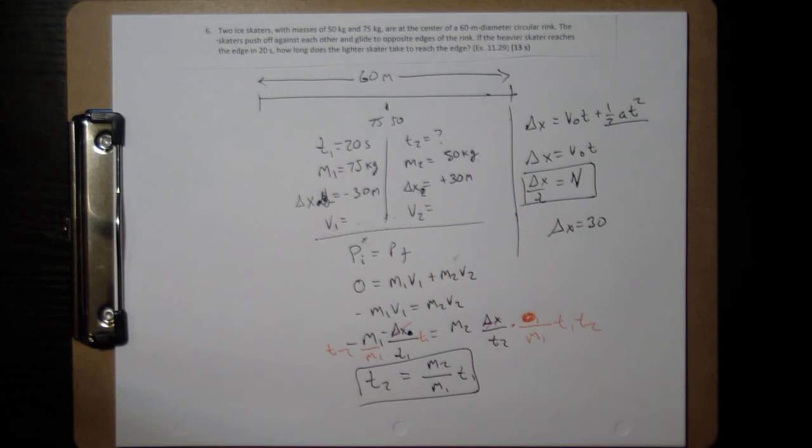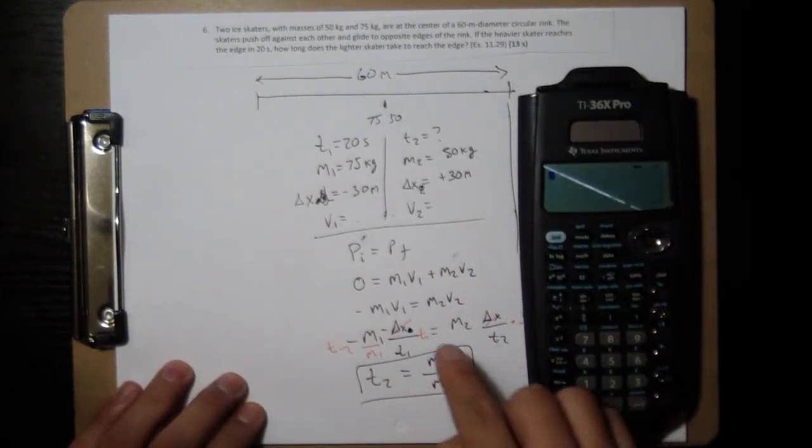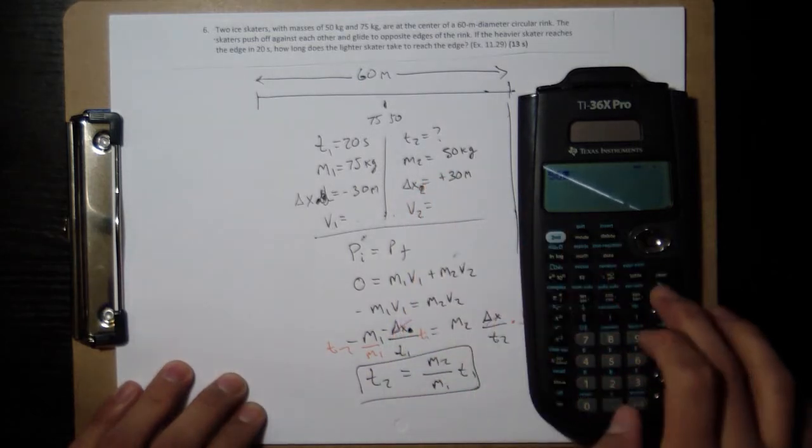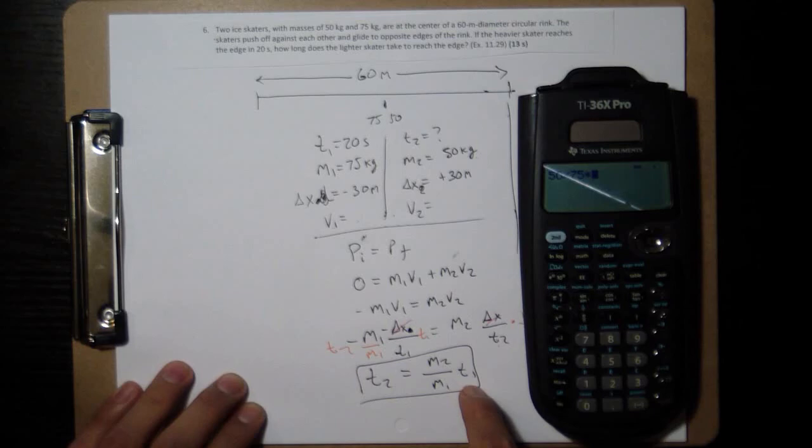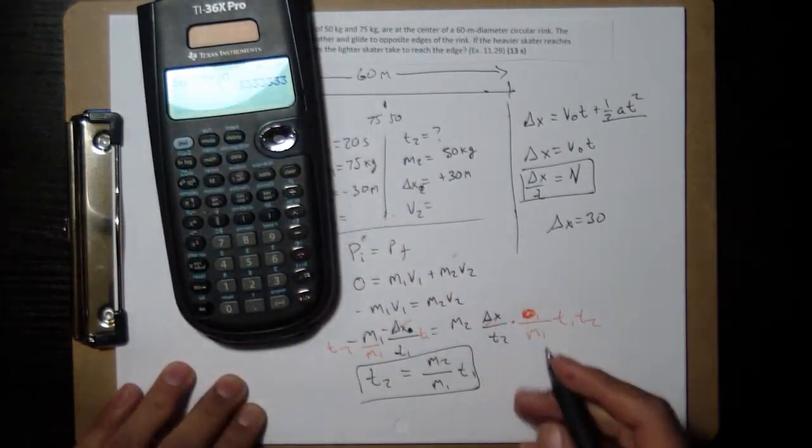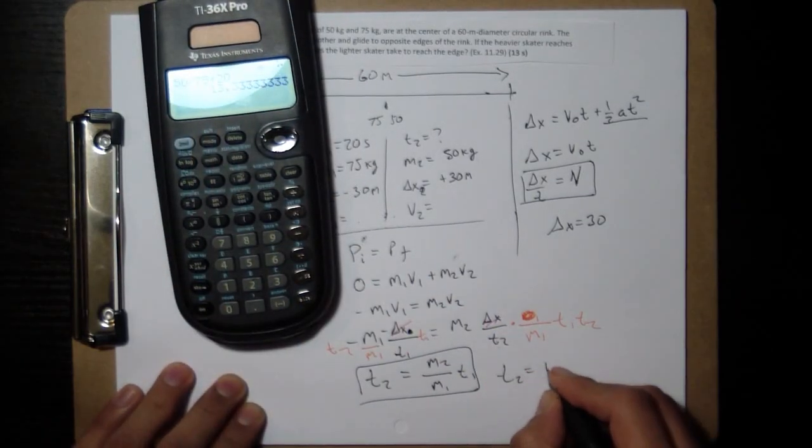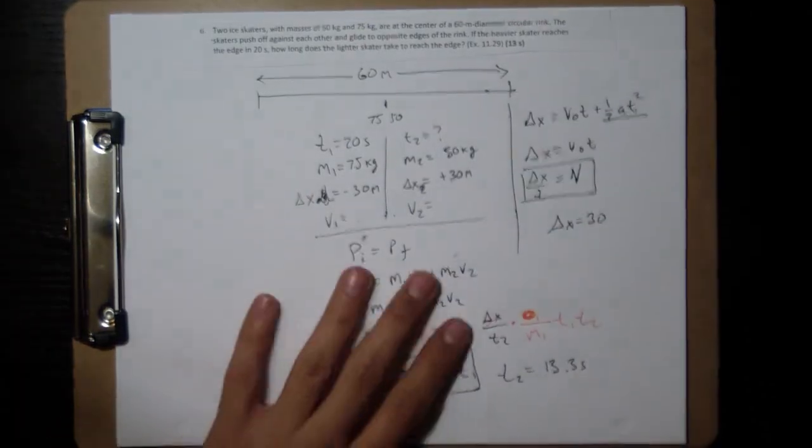Put some numbers to it. m2 is 50, m1 is 75, and t1 was 20 seconds, so we get 13.3 seconds. So we have the answer, done.